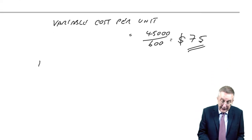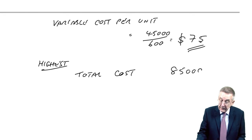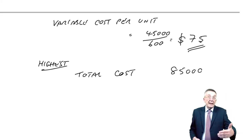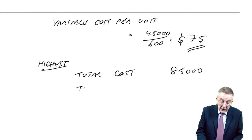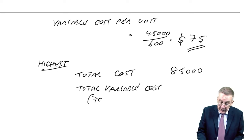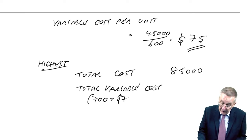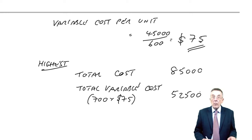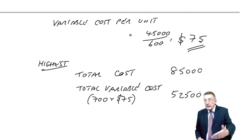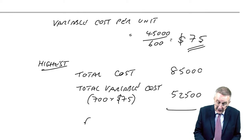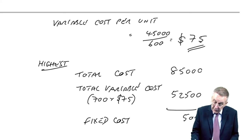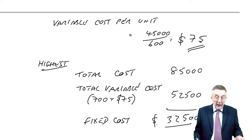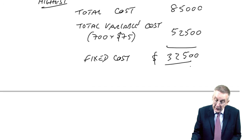I also want to know the fixed cost. Well for the fixed cost, go back to either of those two months, I'll go back to the highest. If you look at the highest month, we know what the total cost was, it was 85,000. That must be the total of the variable and the fixed. We now know what the total variable cost included was. In the highest month it was 700 units, we've calculated each unit had a variable cost of 75, so the total variable cost is 52,500. Surely therefore the remainder of the 85,000 must be the fixed cost, which is 32,500.